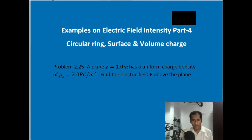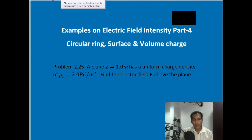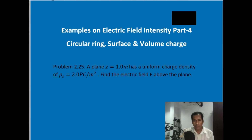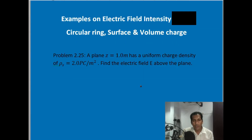Hello everyone, welcome to this session. Today we will discuss the next part of our examples. We will see a few more examples on electric field intensity, covering examples related to circular ring, surface and volume charge density. As already discussed in the previous session, we covered examples relating to line charge and a few on surface charge, and observed that charge density distribution plays an important role in the surrounding region.